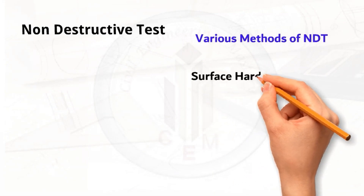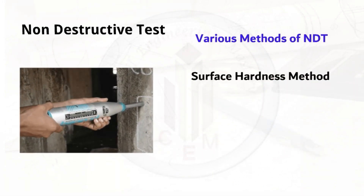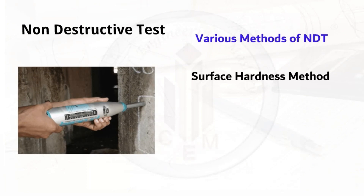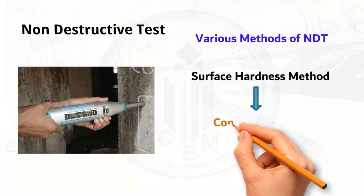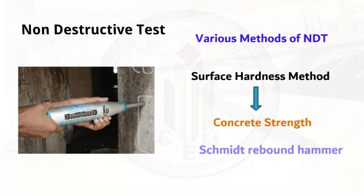The next method is the surface hardness method. Concrete strength is decided by its compressive strength, which affects the load-bearing capacity and durability of the concrete structure. The surface hardness method is used to find out the concrete strength. The Schmidt rebound hammer is the instrument used to measure the surface hardness of concrete, and it is the most widely used portable NDT instrument.